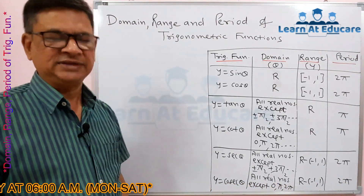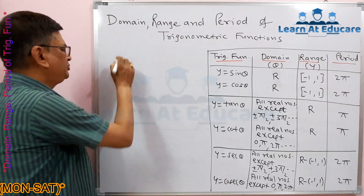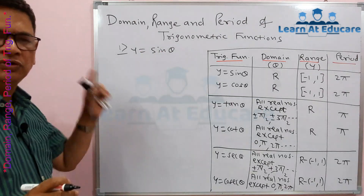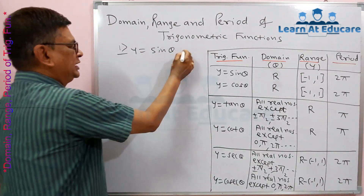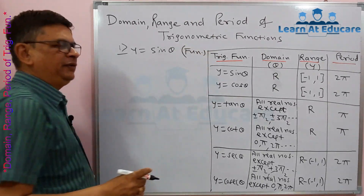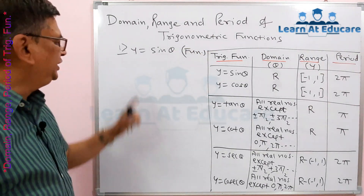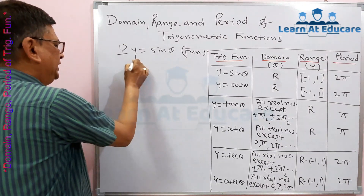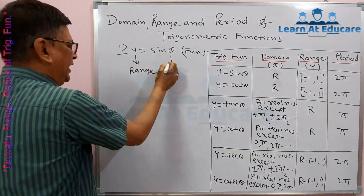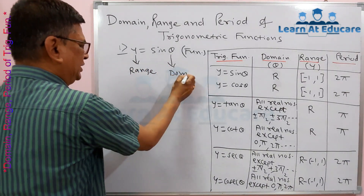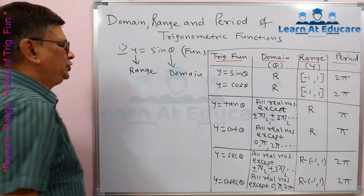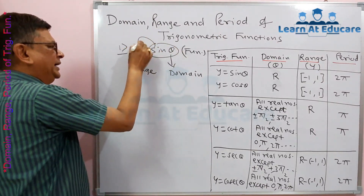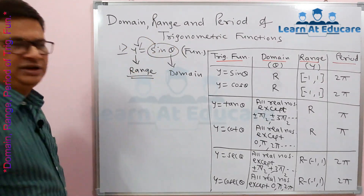The first function is y = sin θ. When you write such an equation, y = sin θ, it is a trigonometric function where y depends on θ. The value of y is called the range, while the value of θ is called the domain. So domain refers to the angle θ values, and the output value of sin θ — that is, y — is called its range.